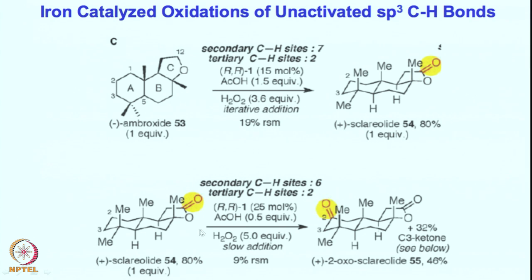Release of strain makes position two the major product. At the other position there is not really much bias, so we cannot prevent ketone formation there. The subsequent major product forms at that position, and that is what we observe.